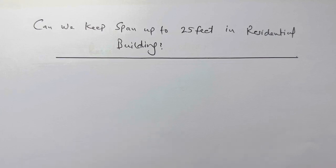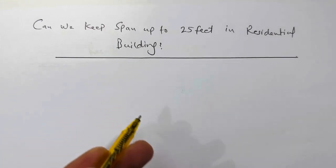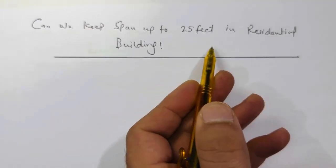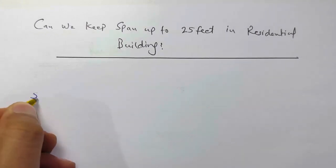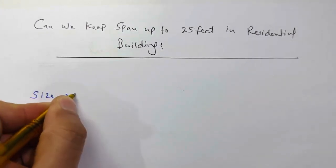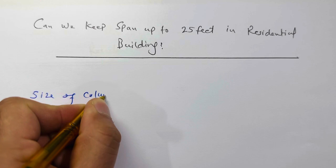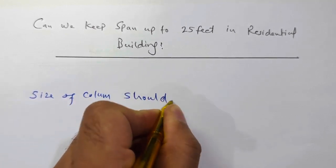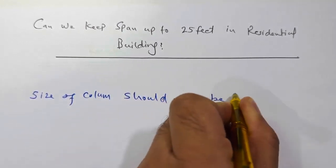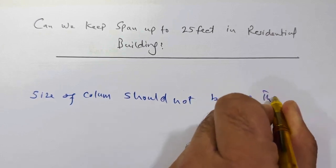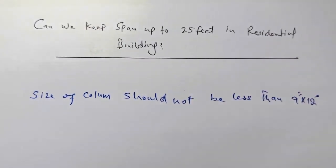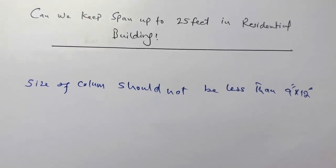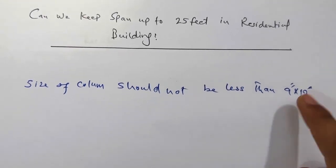Yes, of course we can build up to 25 feet span in residential building. But remember, for this, the size of column should not be less than 9 inches by 12 inches. In this case, if the span is up to 25 feet, this is the minimum size.